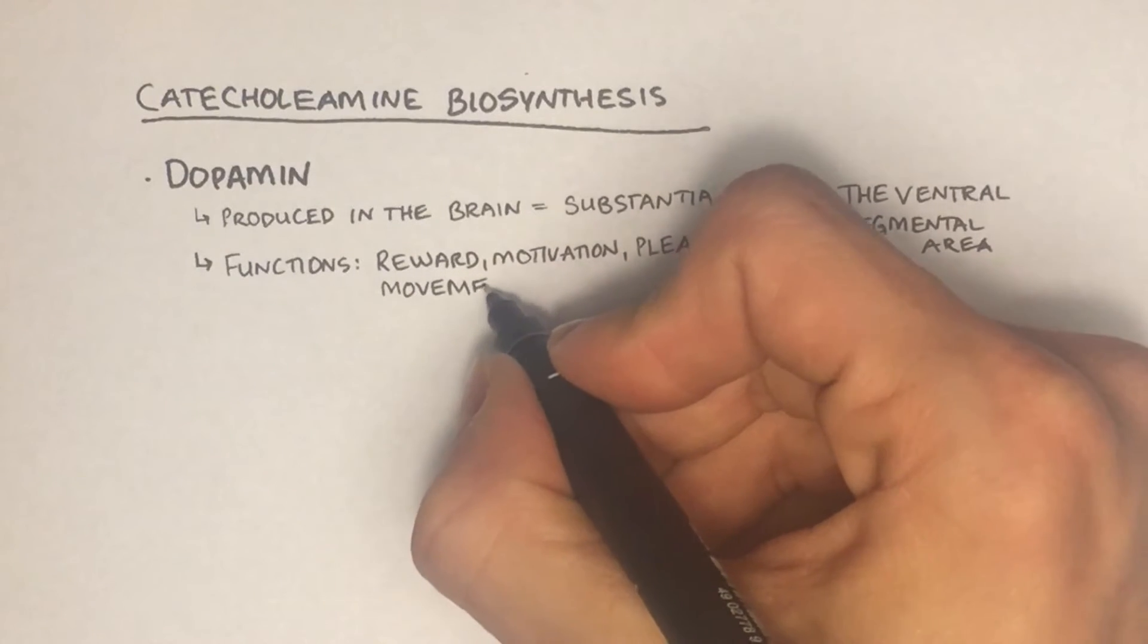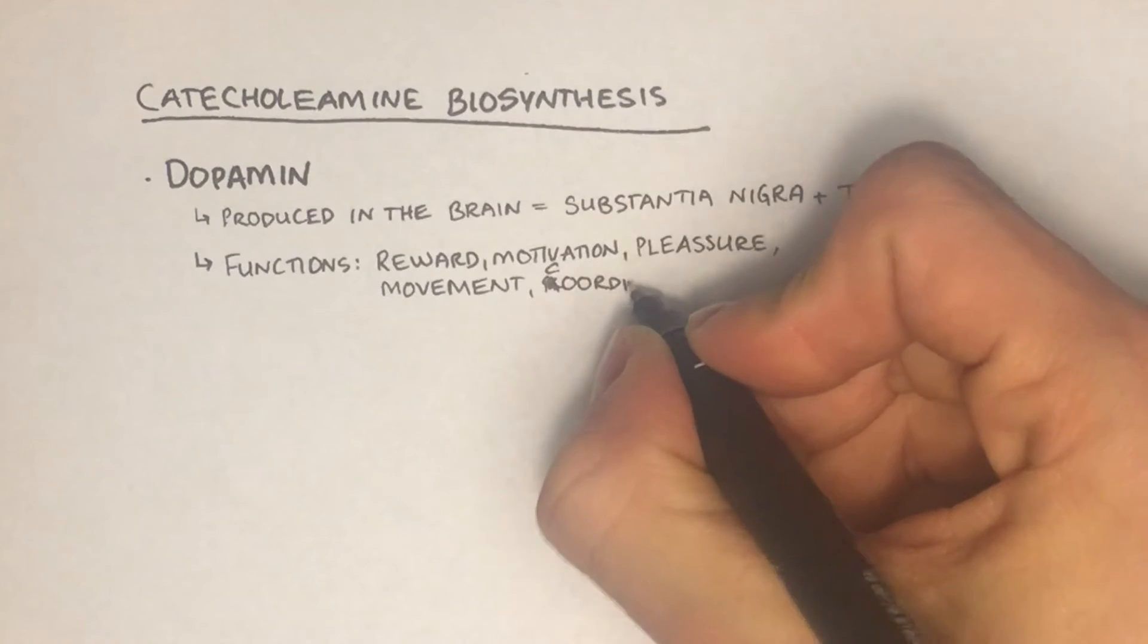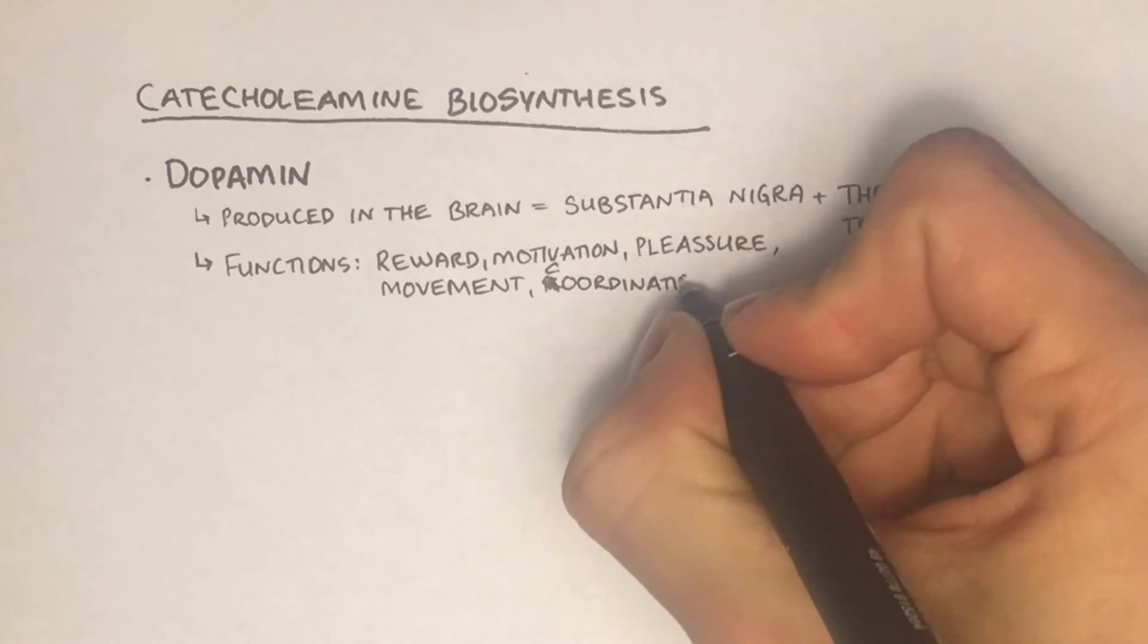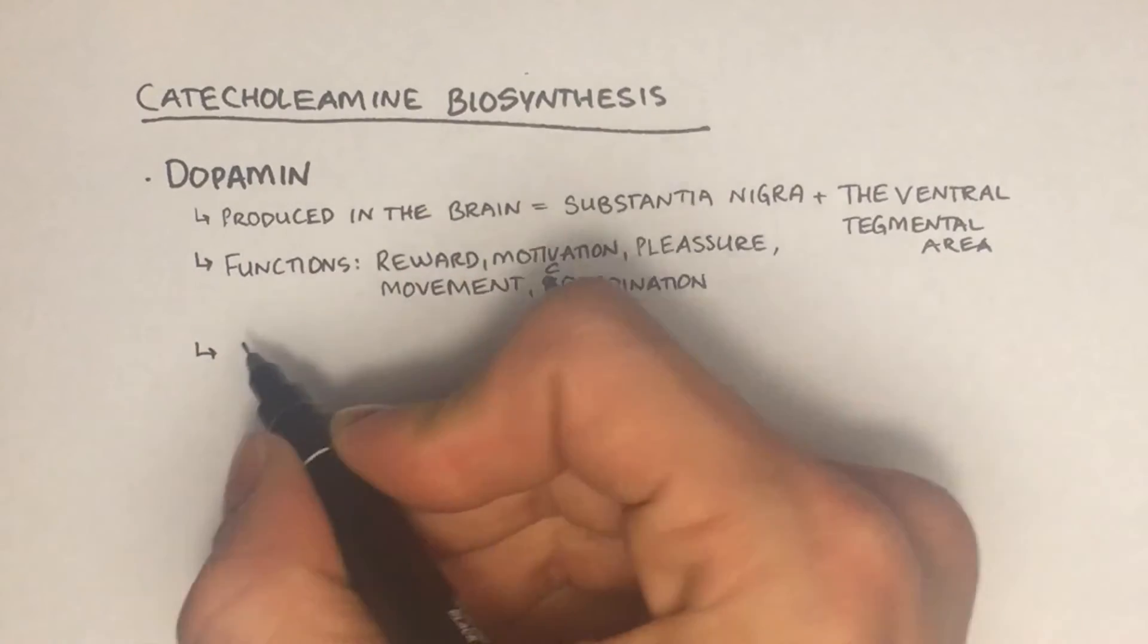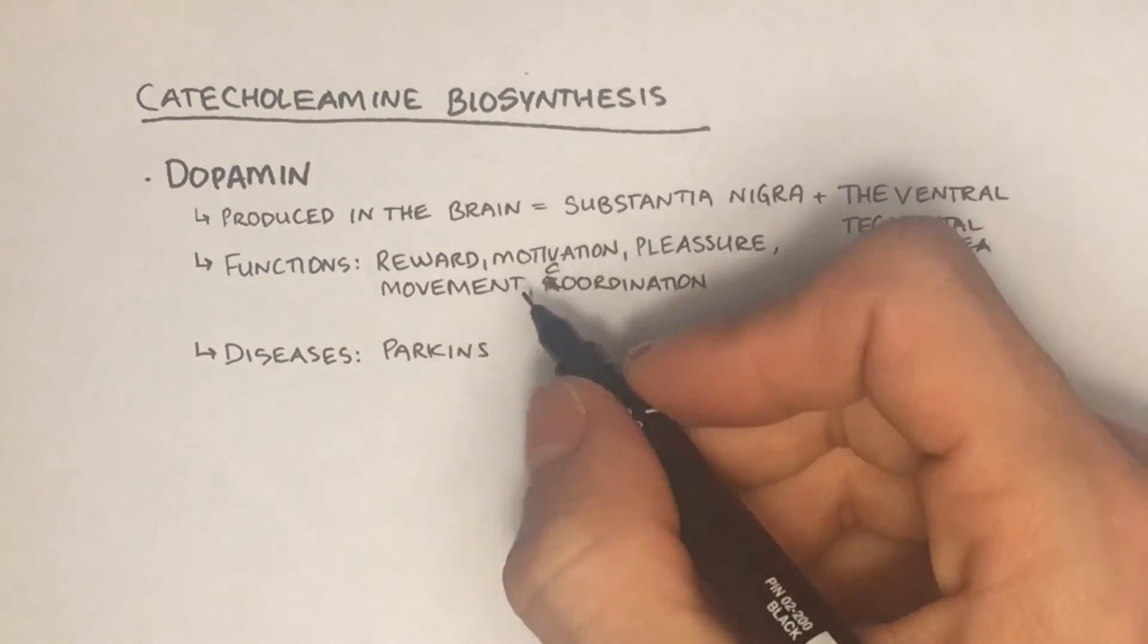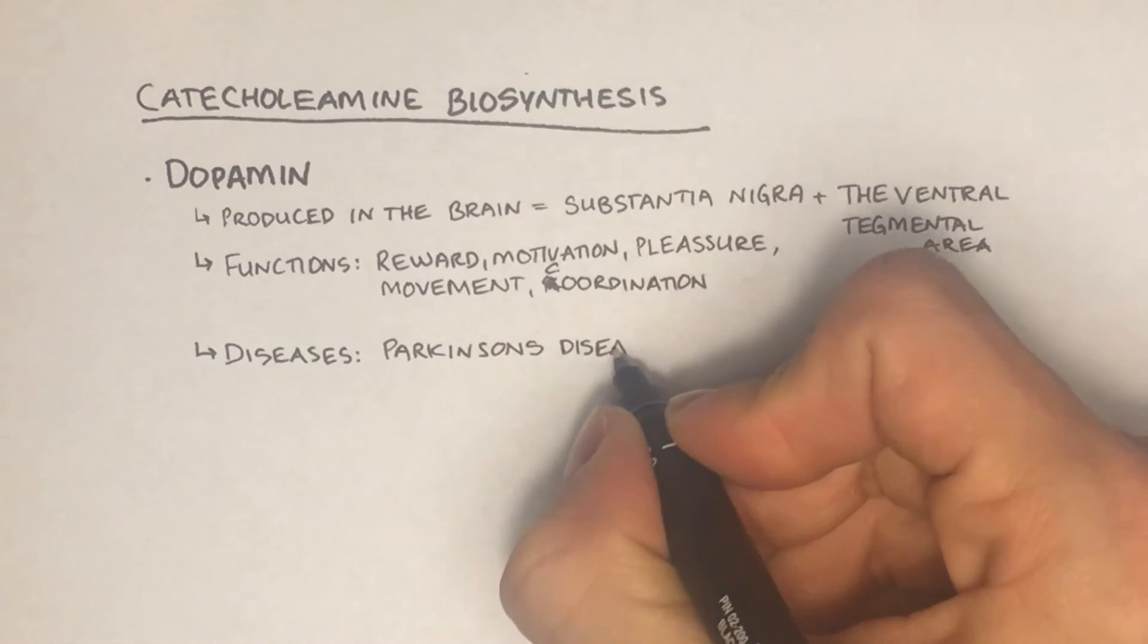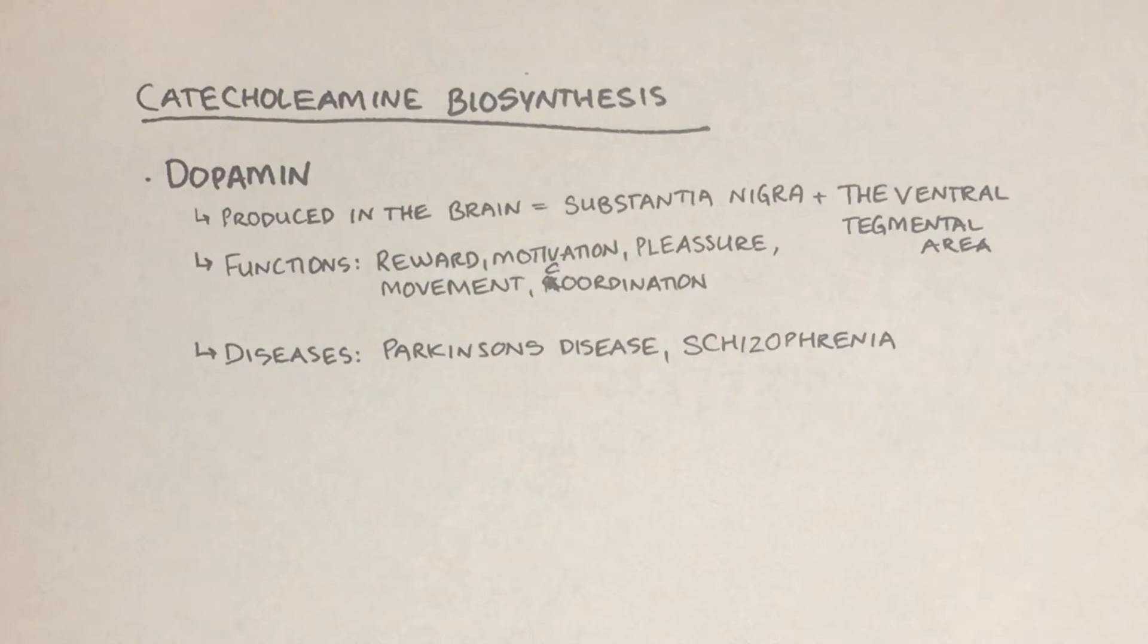It plays a role in reward, motivation, pleasure, coordination and movement. When the dopamine level isn't regulated, it can result in development of Parkinson's disease or schizophrenia. In Parkinson's disease, the neurons that produce dopamine in the substantia nigra have been degraded, so there is a deficiency in dopamine.